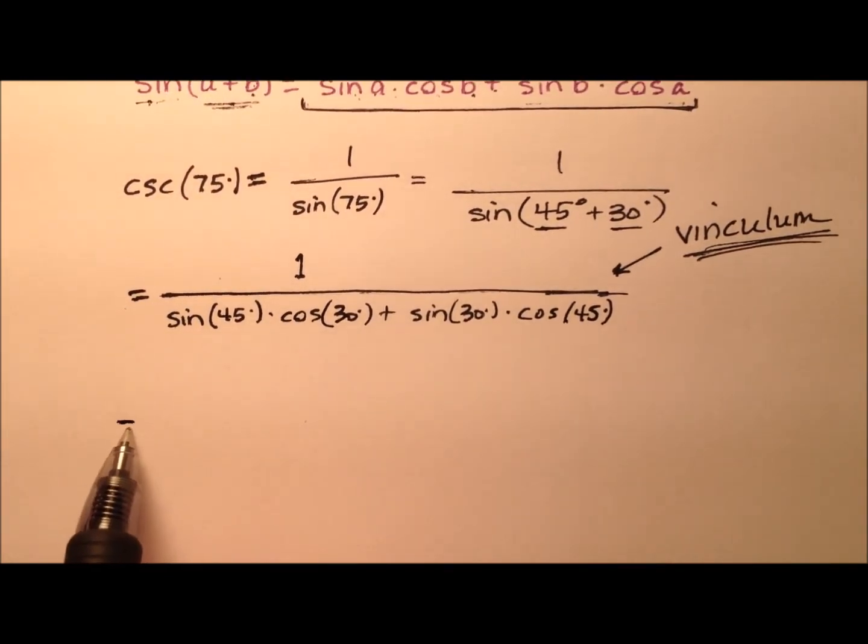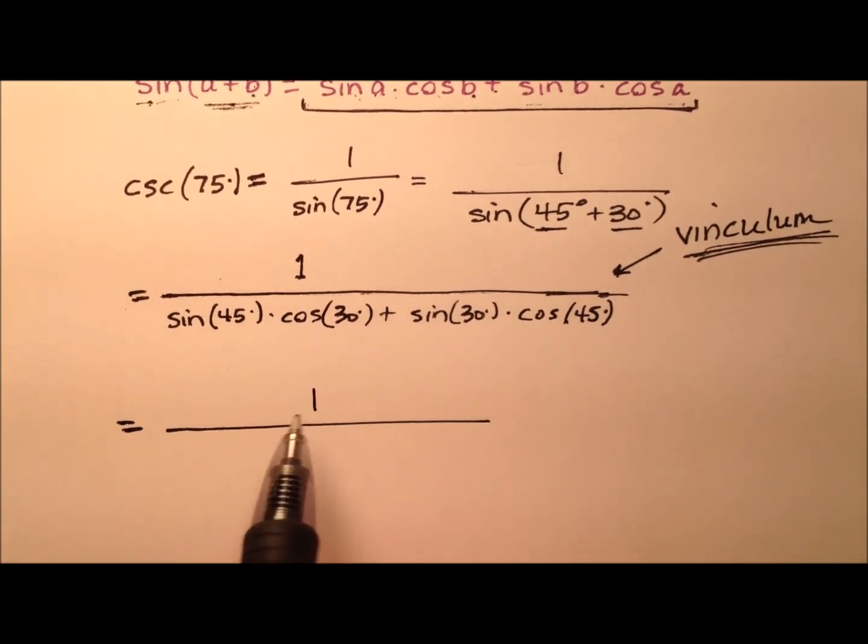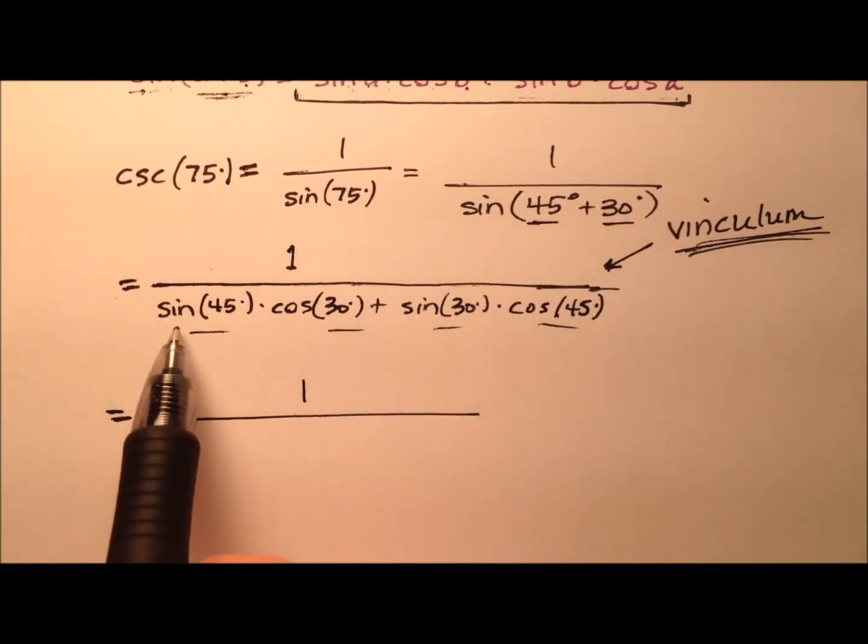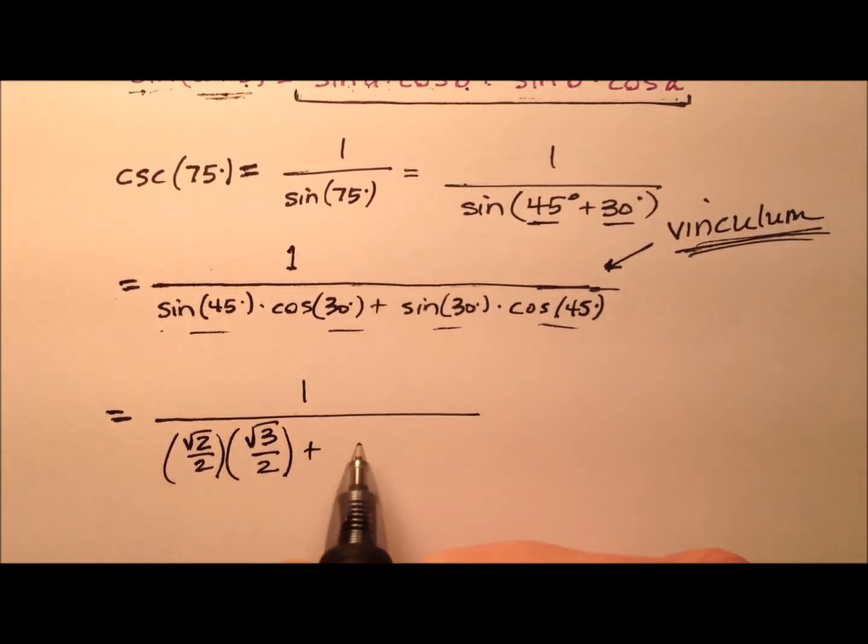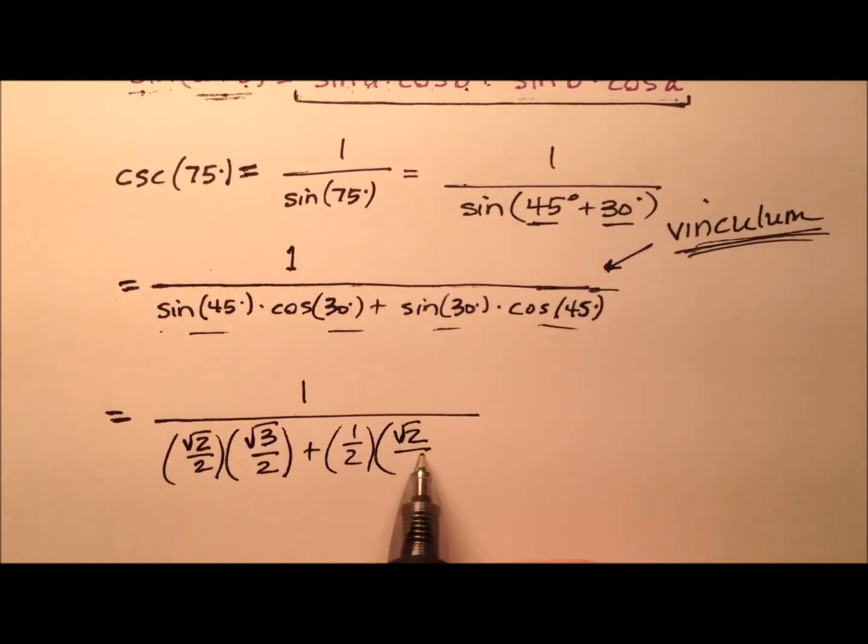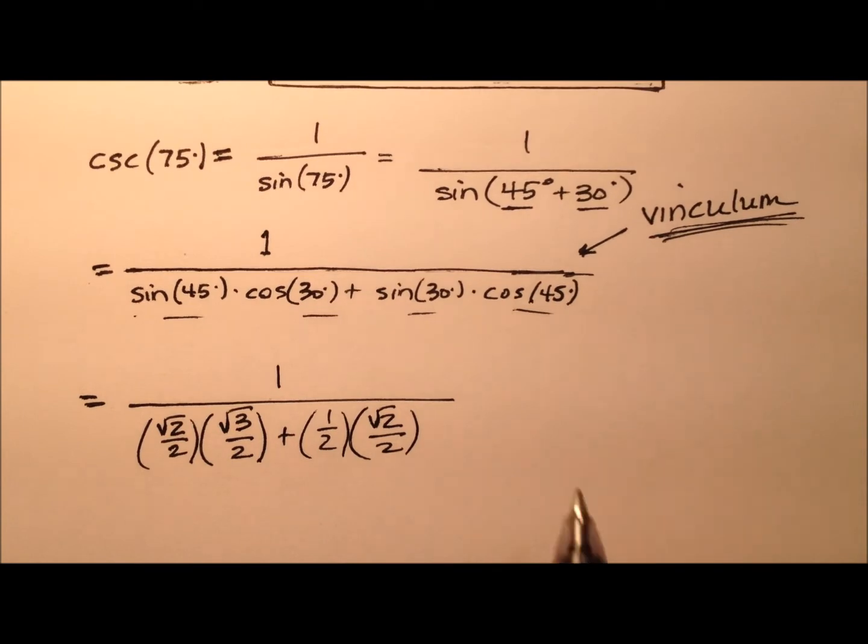At this point, it's time to get all these values. The sine of 45 will be the square root of 2 over 2, and the cosine of 30 will be the square root of 3 over 2. We'll add to that product the sine of 30, which is 1 half, and the cosine of 45, which is also the square root of 2 over 2.